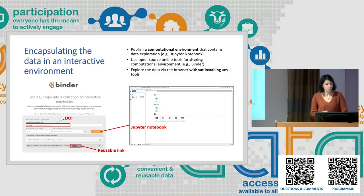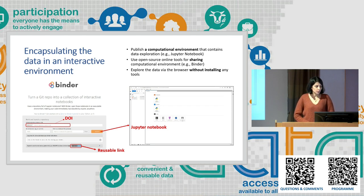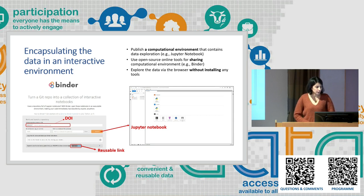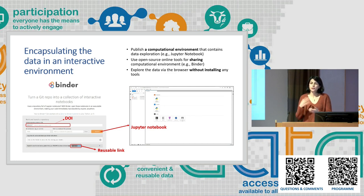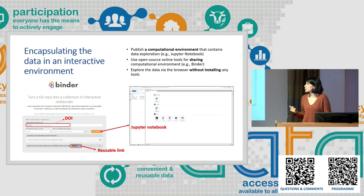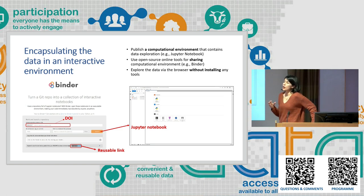For example, Binder is one of those open-source tools that supports building and sharing Jupyter Notebooks. If data producers publish their Jupyter Notebook in GitHub and provide the DOI of their GitHub repository to Binder, Binder gives a reusable link that you can share with your data. When people find your data and open this link, they can start exploring it in the Jupyter Notebook you have provided. And if they find your dataset interesting, they can download it. For big datasets, you can also provide the opportunity for users to extract just a subset.